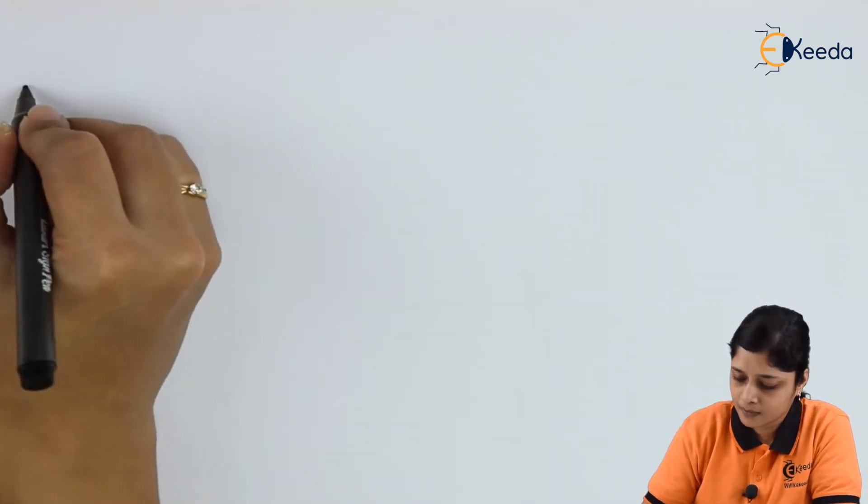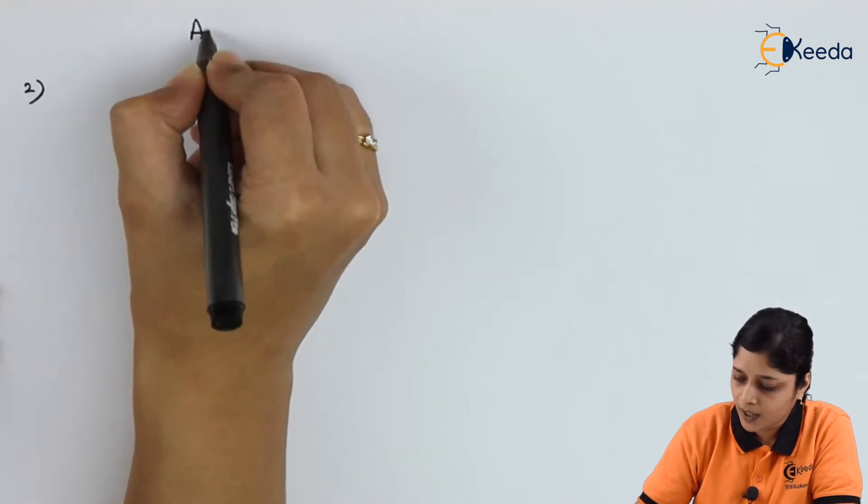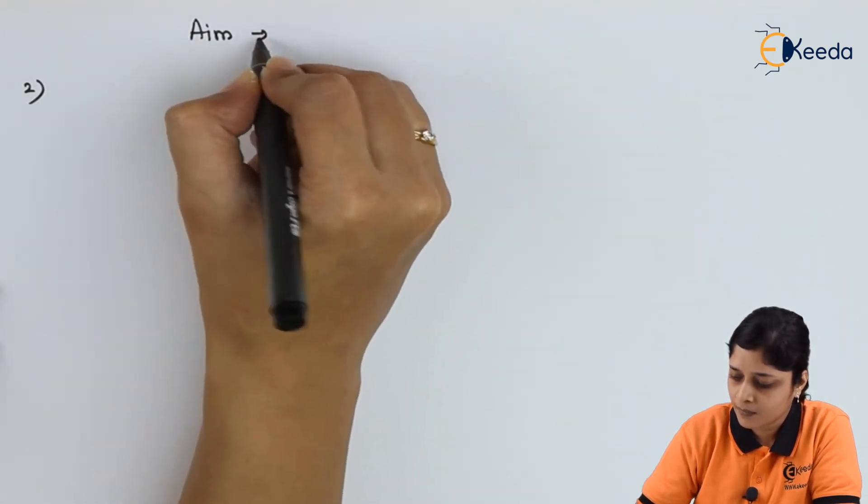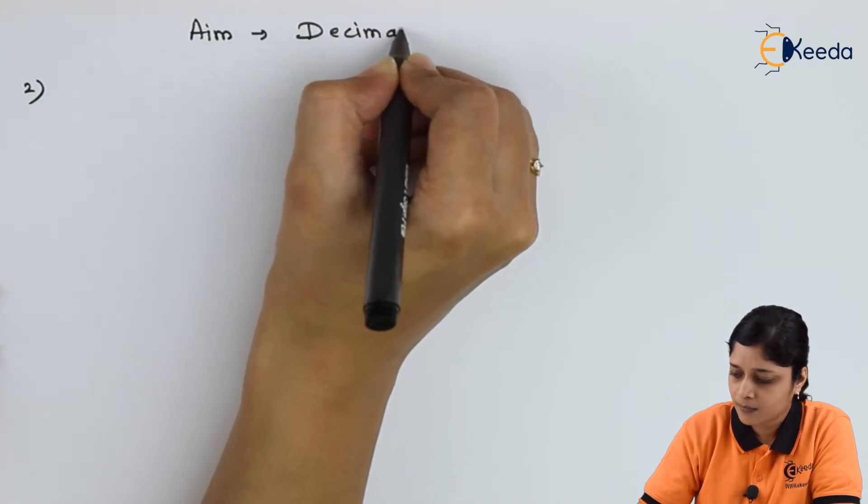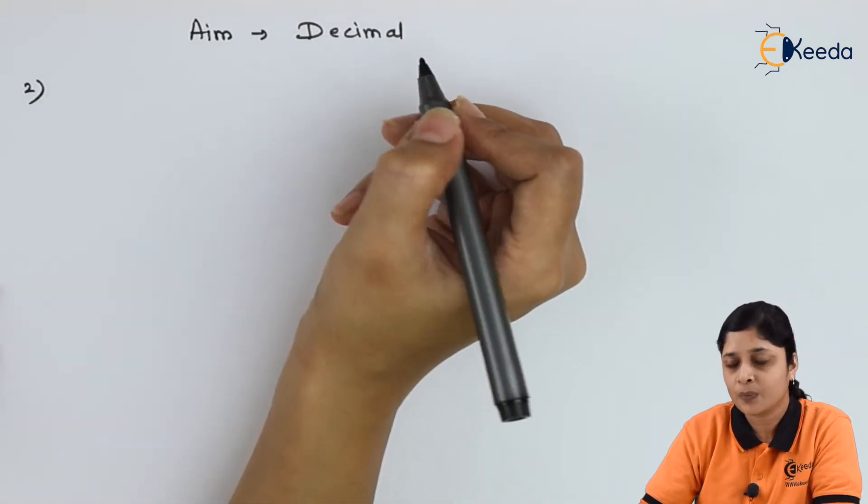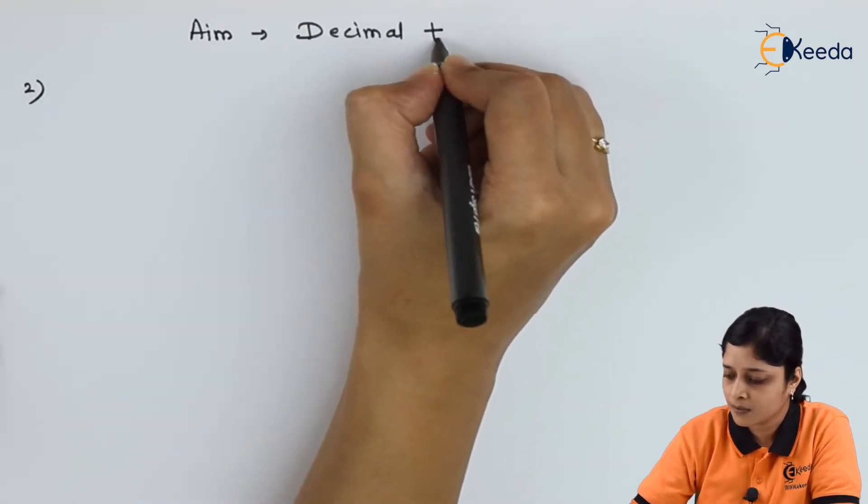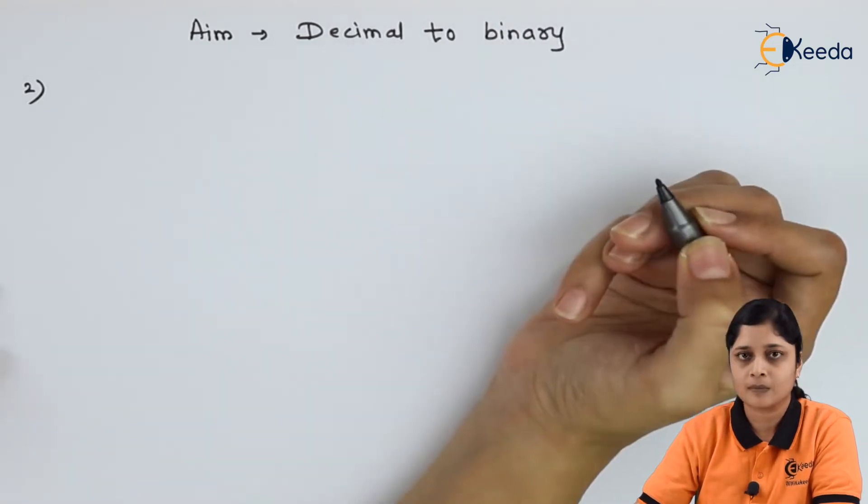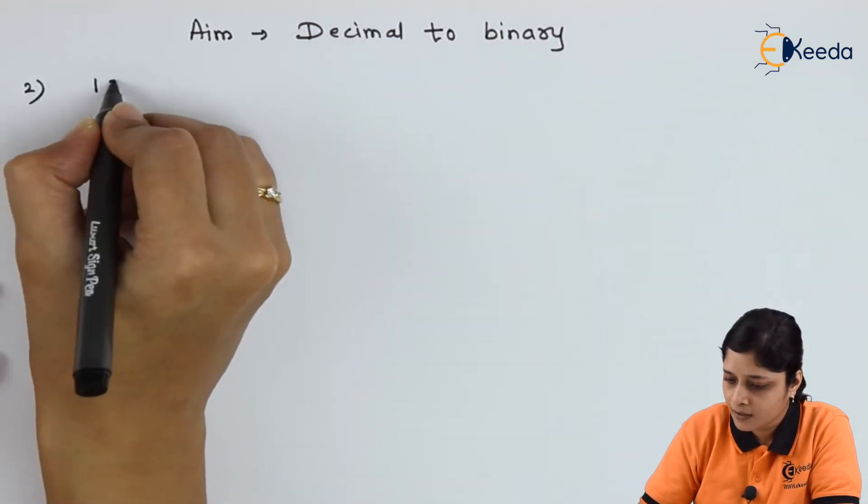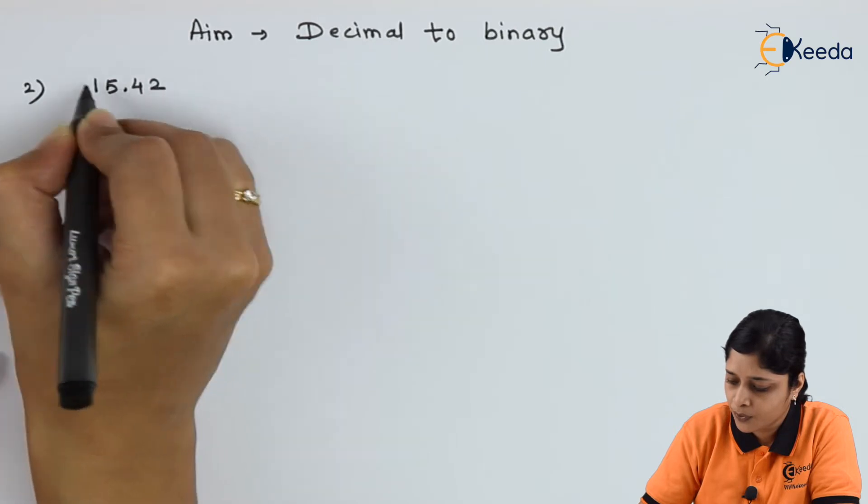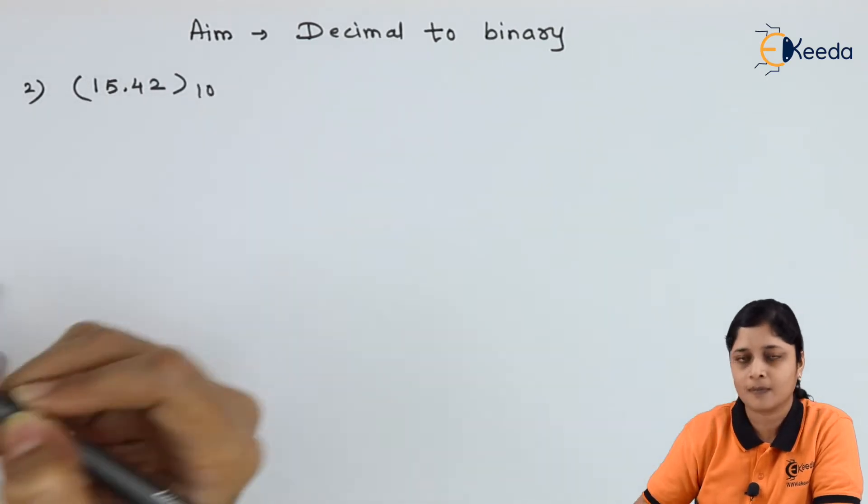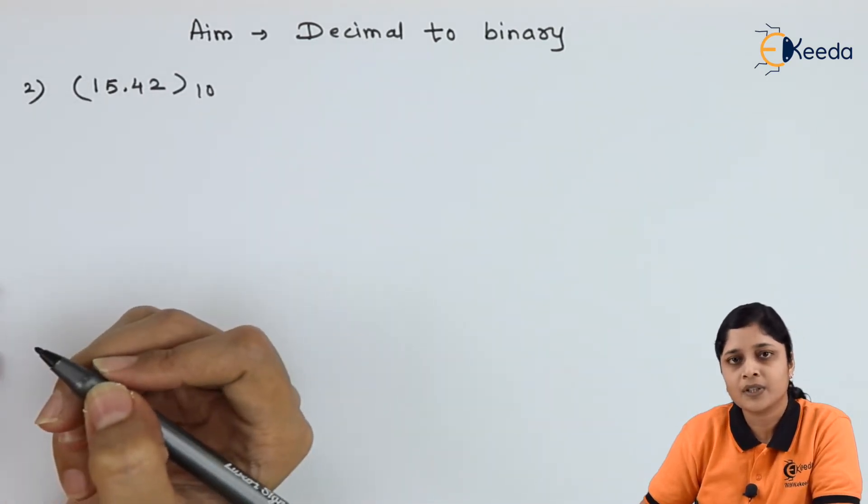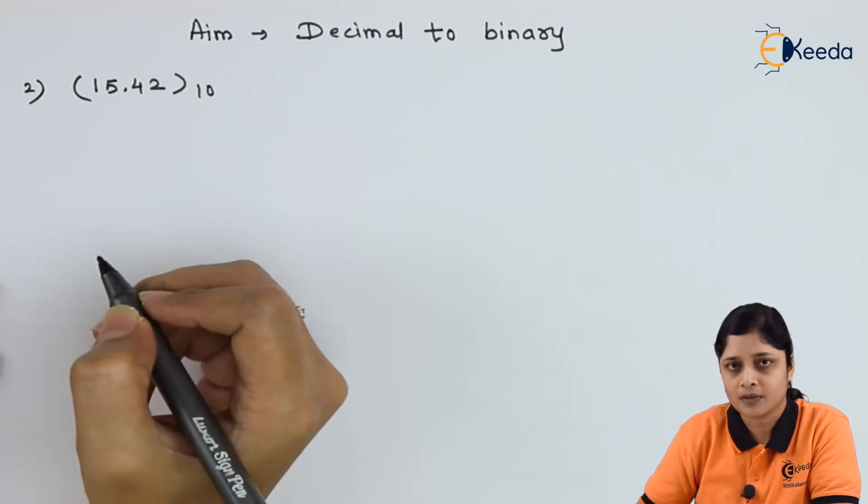Now let's start with second example. Write down aim: decimal number to binary number. Example is 15.42 to the base 10. Here the difference is of decimal point. How to solve.